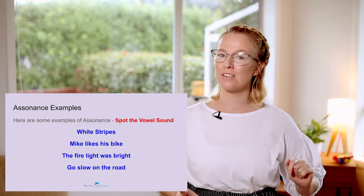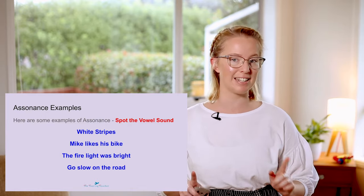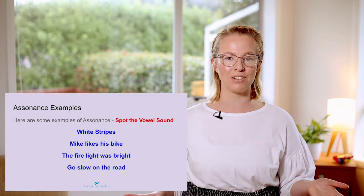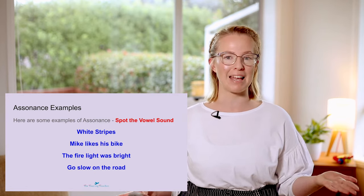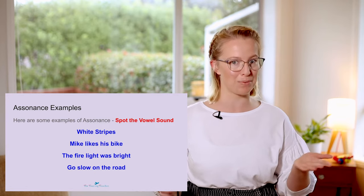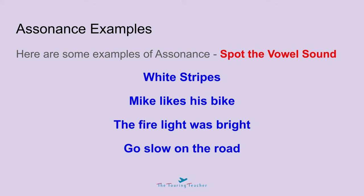I've got some examples of assonance for you to listen to and read, and I want you to see if you can find the vowel sound which is making the assonance work. Let me read them out for you: 'white stripes', 'Mike likes his bike', 'the fire light was bright', 'go slow on the road'.